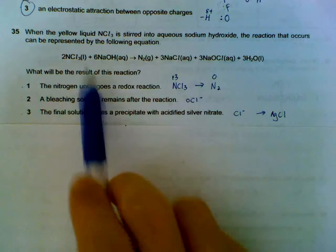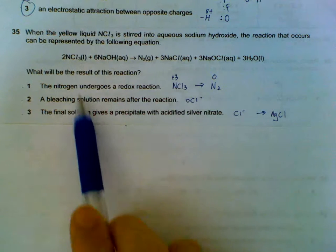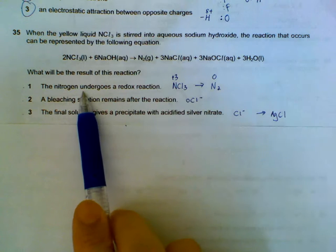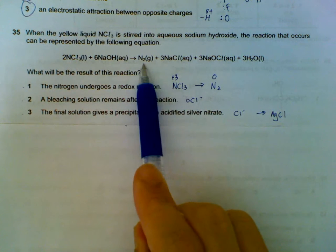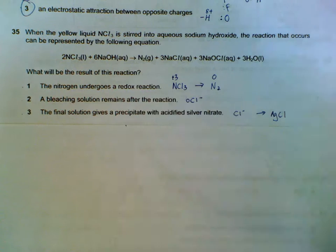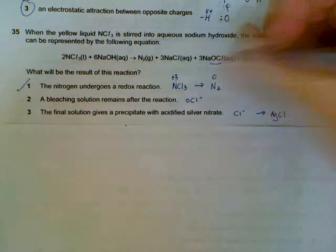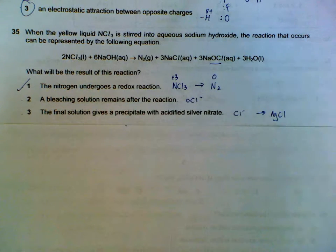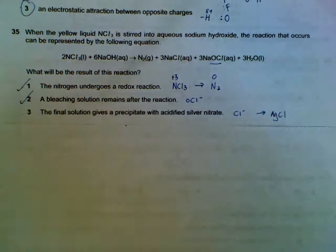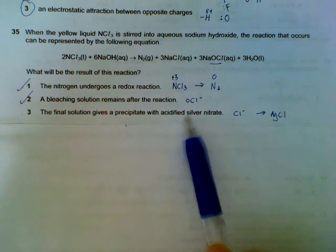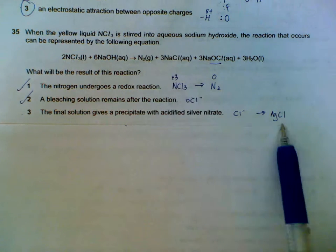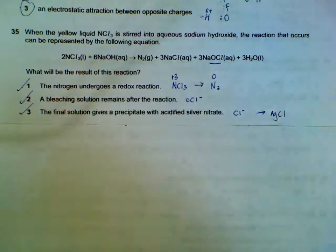35, we have this reaction. So we check the statements. Nitrogen undergoes redox reaction. Nitrogen here is plus three, and then when it becomes nitrogen in the form of element it becomes zero. So it undergoes reduction. So it undergoes a redox reaction. And then bleaching agent remains. The bleaching agent is referring to your OCl minus, that's a component of bleach. And then final solution gets precipitated with silver nitrate. It contains chloride ions which will give a white precipitate with silver nitrate. So all three statements are correct.